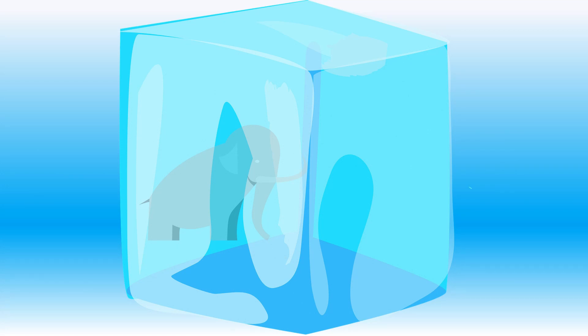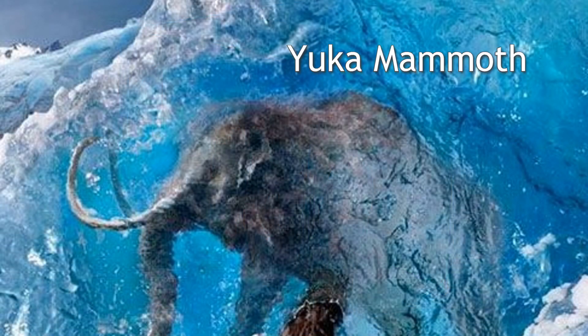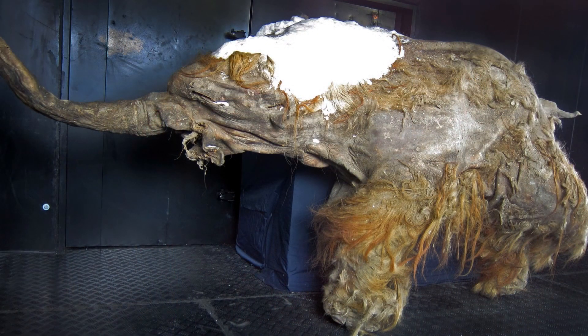Some animals were frozen deep in the ice and mummified, preserving them exactly how they were. An example is the woolly mammoth, an Ice Age animal mummified in the Siberian permafrost in Russia. The 39,000-year-old mammoth's muscles, ligaments, and blood vessels were preserved.